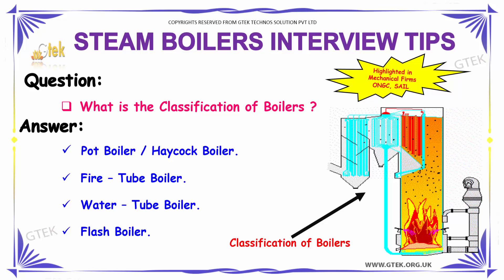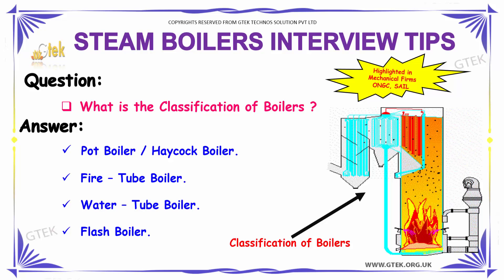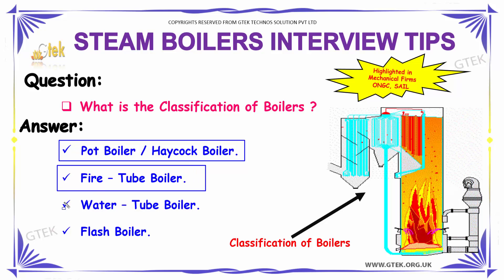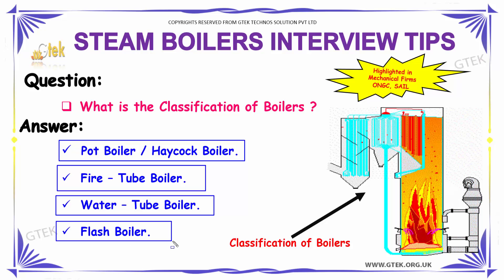What is the classification of boilers? The classification of boilers is as follows: the first is pot boiler, also called haycock boiler; the second one is fire tube boiler; the third one is water tube boiler; and the fourth one is flash boiler.